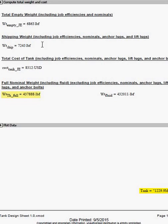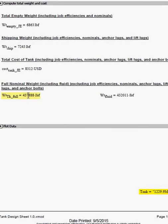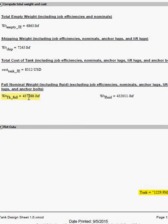On page 12, there's a total weight of including job efficiencies and nominals, and then a shipping weight, and then a total cost of the tank, including job efficiencies, nominals, anchor lugs, lift lugs, and there's also the total operating weight.